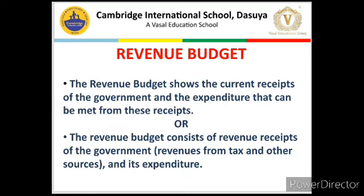Now, revenue budget. Revenue budget shows the current receipts of the government and the current expenditures that can be fulfilled from those current receipts. Basically, revenue budget is that part of a government budget which consists of current expenditures and current receipts, which are more in the present. Revenue expenditure means what the government is going to spend on a recurring, regular basis. Revenue income means how the government is going to receive its income on a regular or recurring basis. Revenue is an idea which shows continuity — it is recurring and regular.